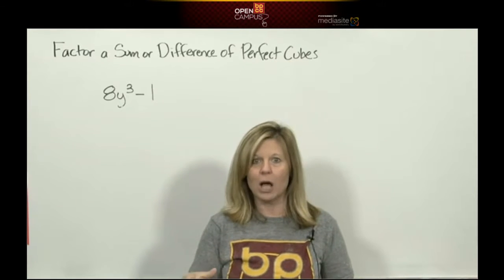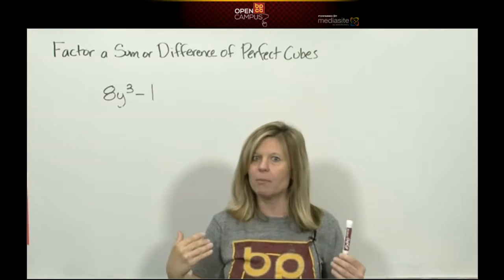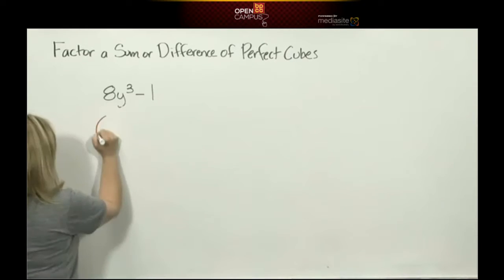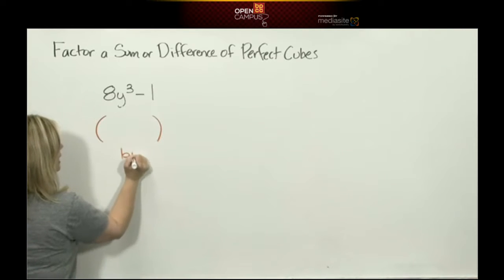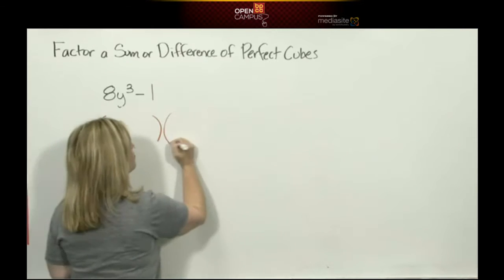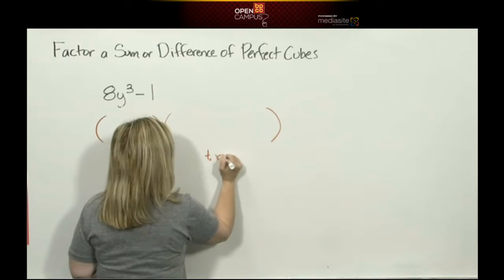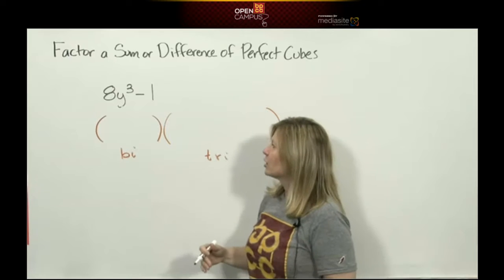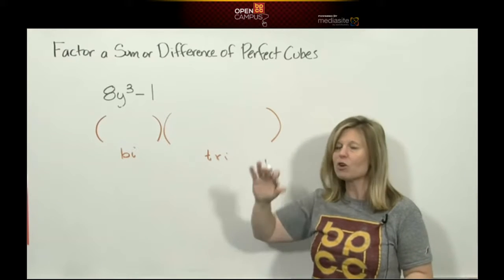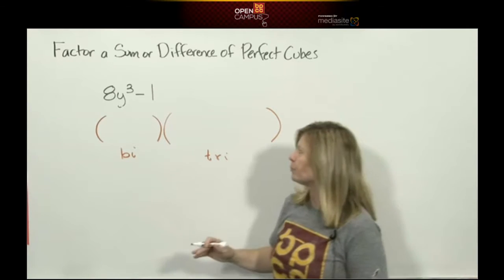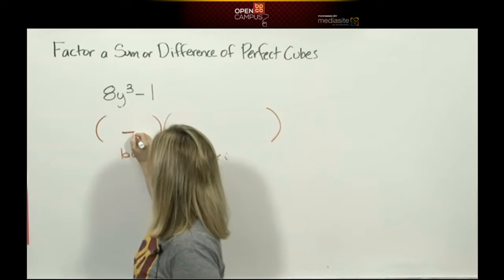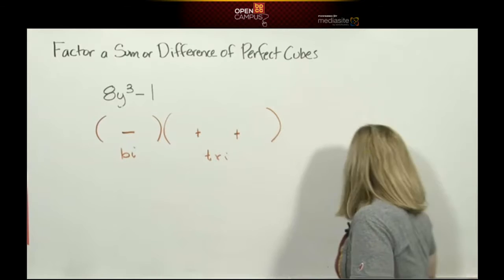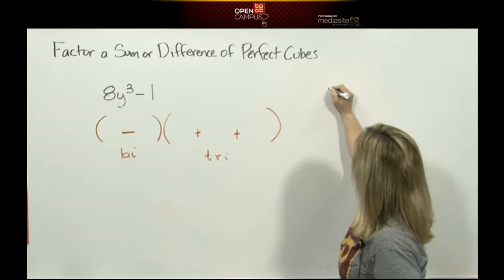Once I know which rule I'm using now here comes all the memorized facts. Okay it's a difference of perfect cubes. It's always going to be a binomial, a small parentheses, times a trinomial, a big parentheses. Always, always, always. Next I'm going to put the signs in first because it's a memorized pattern. If it starts out as a subtraction it goes minus, plus, plus.